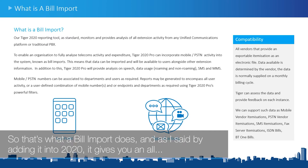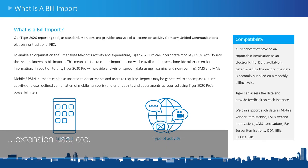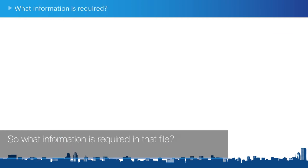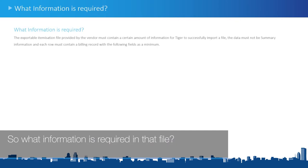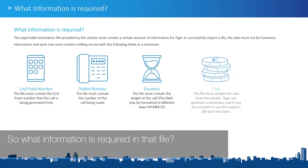That's what a bill import does. By adding it into Tiger 2020 it gives you an all-encompassing system that allows you to bill departments based upon their mobile and extension use. So what information is required in that file?